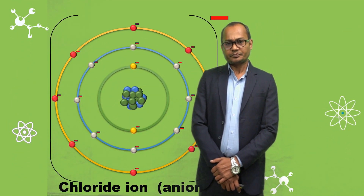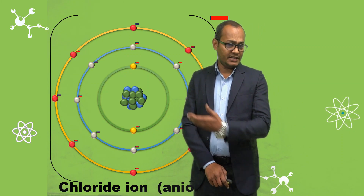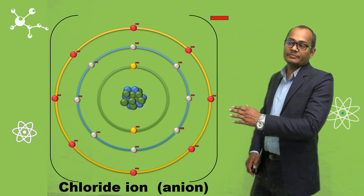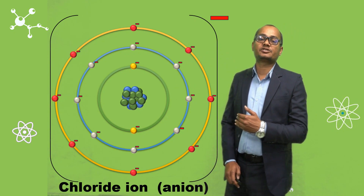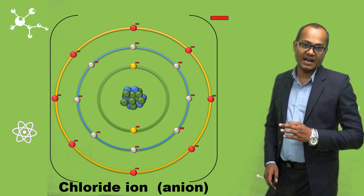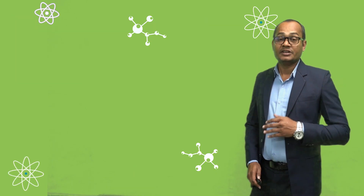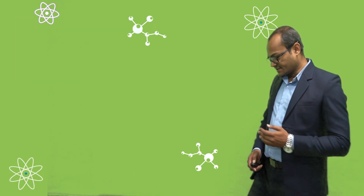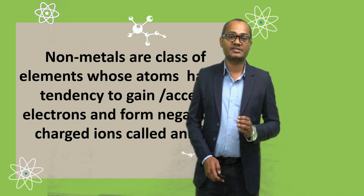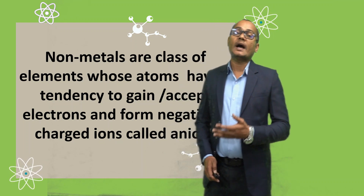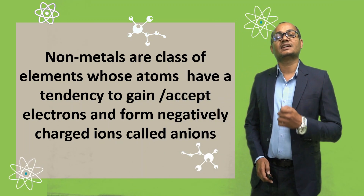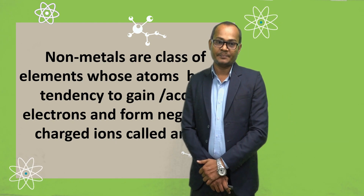And if we look at non-metals, what are non-metals in that case? Now here you can see a chlorine atom. This chlorine atom has a tendency to accept electrons and become a negatively charged ion called an anion. So non-metals are nothing but a class of elements whose atoms have a tendency to accept electrons and form negatively charged ions called anions.